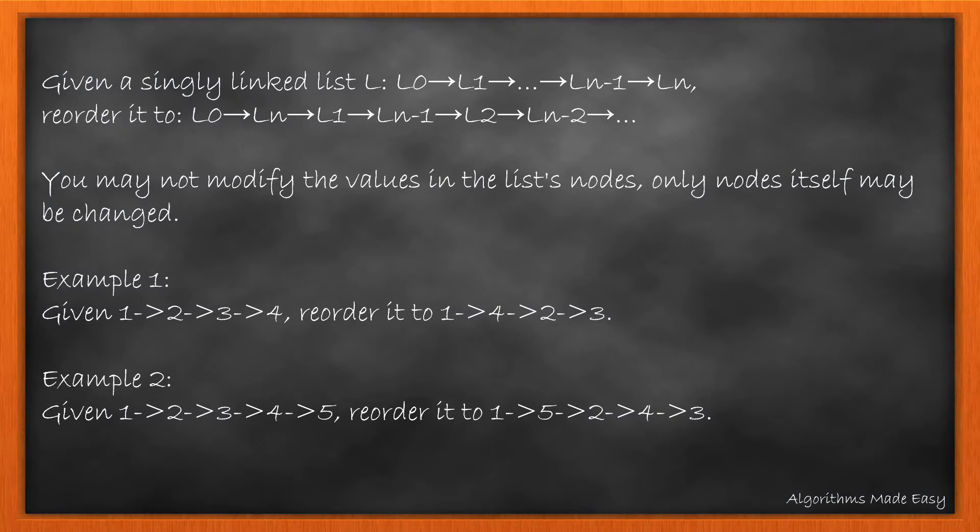Given a singly linked list with list nodes L0, L1 to Ln, we need to reorder its nodes as given. You may not modify the values in the list node. Only nodes themselves must be changed. For the given example 1234, the reordered list becomes 1423. Similarly for example 2.